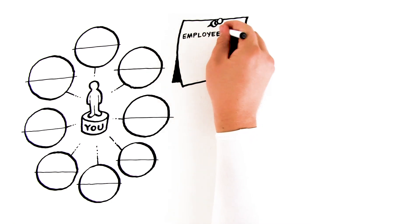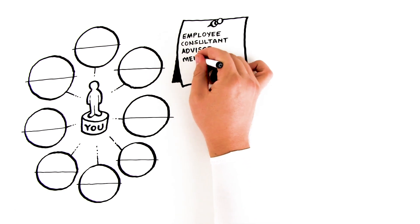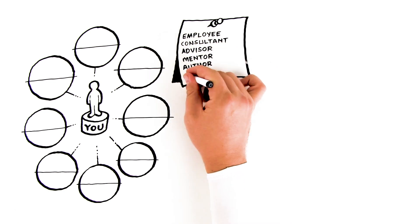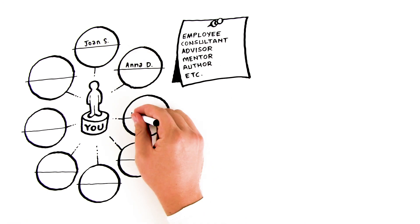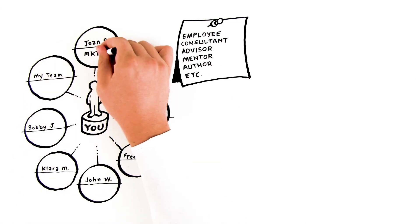It could be someone who works for you, a consultant, an advisor, a mentor, an author, but that person is extremely valuable to you. Write their name at the top of the circle. Go around and write the names of the eight most important people to your business.